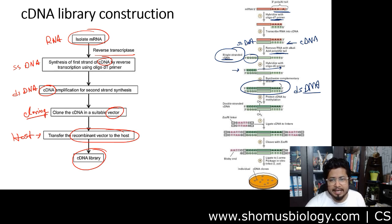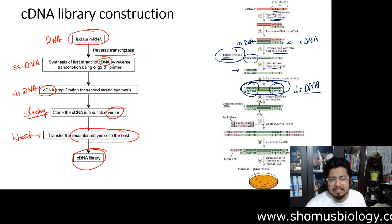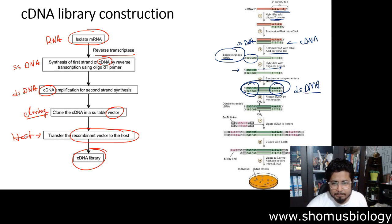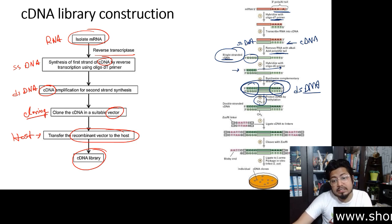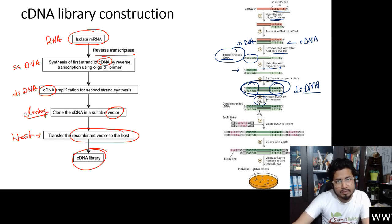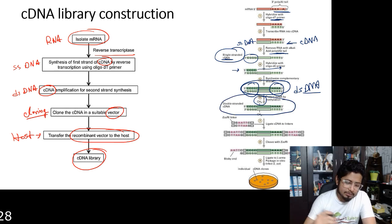Double-stranded DNA is now created, with AT on one end and GC on the other. These CG and AT ends protect the DNA from damage, and methylation is performed on the newly synthesized strand. The newly synthesized DNA strand is methylated to protect it from DNA damage — that is the purpose of the methylation marking done here.